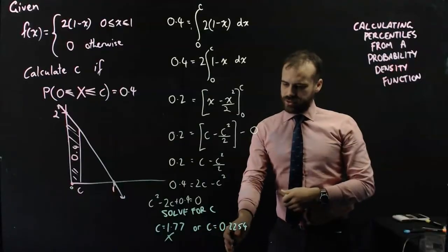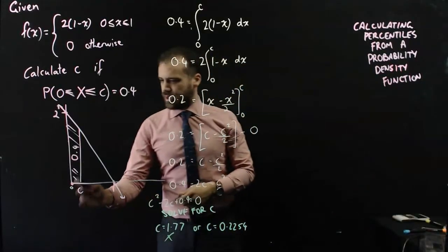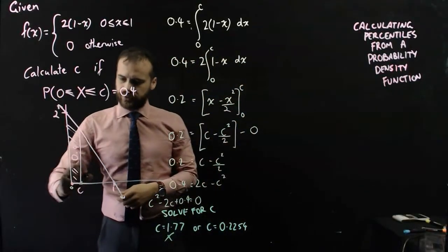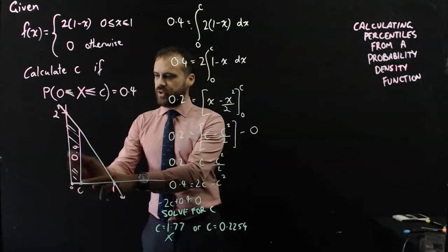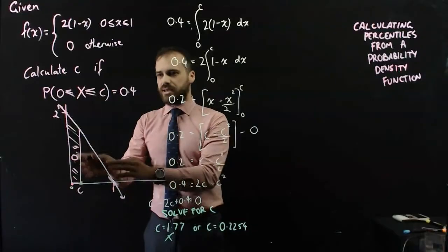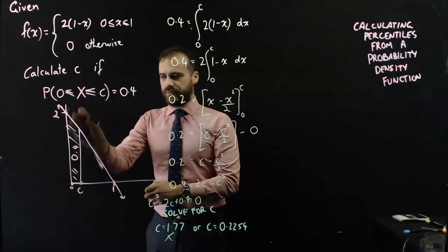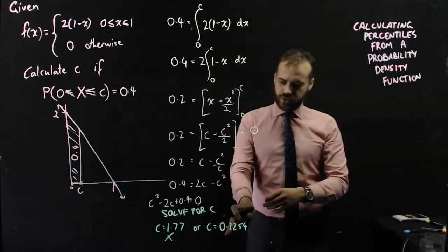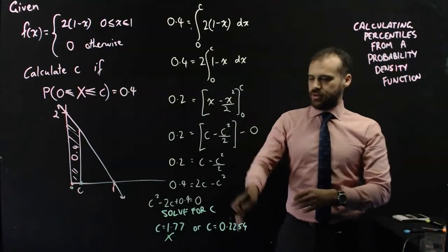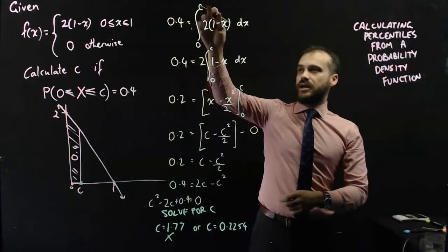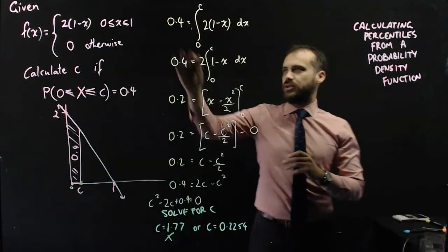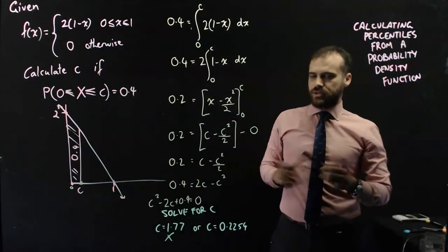C equals 0.2254. That's about a fifth of the way along. And if you look at it, well, the whole area is 1. A fifth of the way along. That kind of makes sense. Now, of course, you could do this whole thing again, subbing in 0.2254 for C here, and solving it. And I feel really confident that your answer is going to be 0.4.